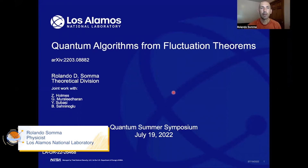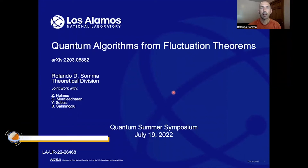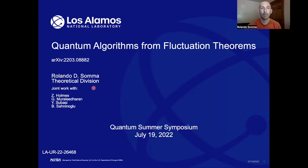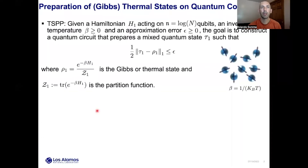In this talk, I will summarize a recent paper on quantum algorithms for fluctuation theorems with emphasis on the problem of preparing thermal or Gibbs states on quantum computers. This is joint work with a number of colleagues from Los Alamos National Laboratory. We are going to assume for simplicity that we are working with n-qubit systems and that we are given a Hamiltonian H1 that models the interactions among those qubits.